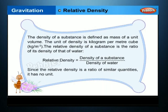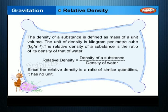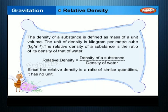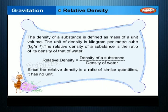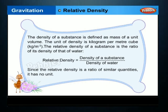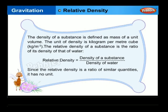Relative density: the density of a substance is defined as the mass of a unit volume. The unit of density is kilogram per metre cube. The relative density of a substance is the ratio of its density to that of water: relative density = density of substance ÷ density of water. Since relative density is a ratio of similar quantities, it has no unit.